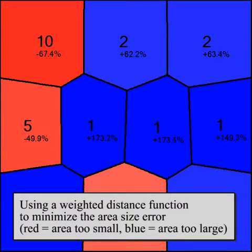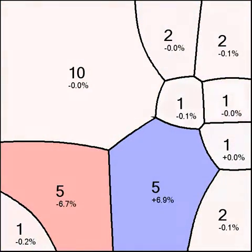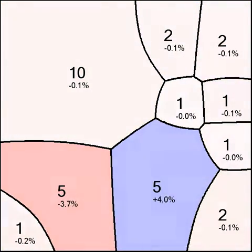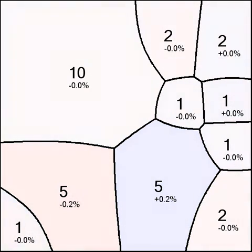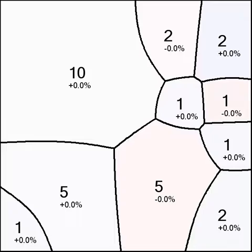This weight parameter is adjusted during the iterative computation to minimize the area size error of the tessellation. The result are non-regular subdivisions with an area size error below a chosen threshold.